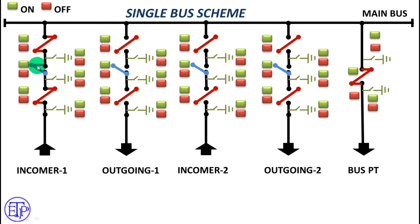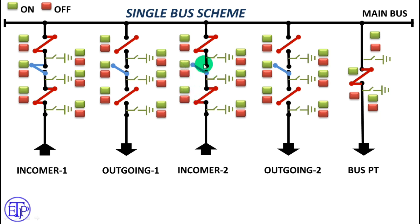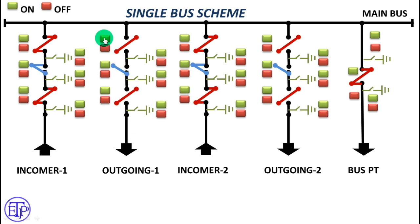Now we can charge the second incomer also. For this case, we will first close this isolator, then this isolator — or we can do it in reverse order. Before closing this breaker, we have to match the synchronization, because the first incomer is already giving power to this bus bar. This power source should be in sync with the other power source — by checking that, we can close this breaker also. Now two incomers are closed. For the closing of the outgoing feeder, we will first close the two isolators and then close the circuit breaker.